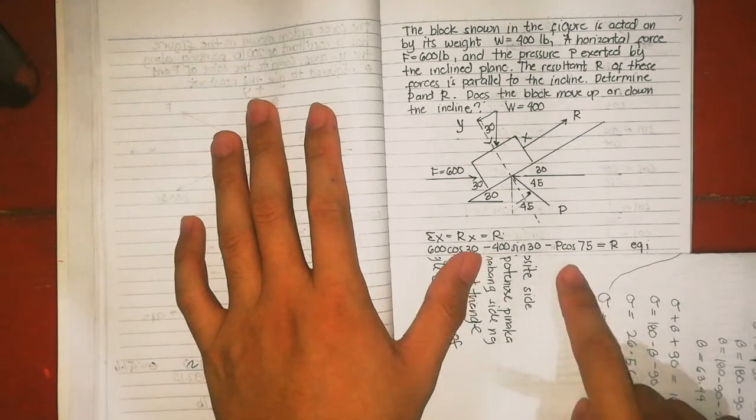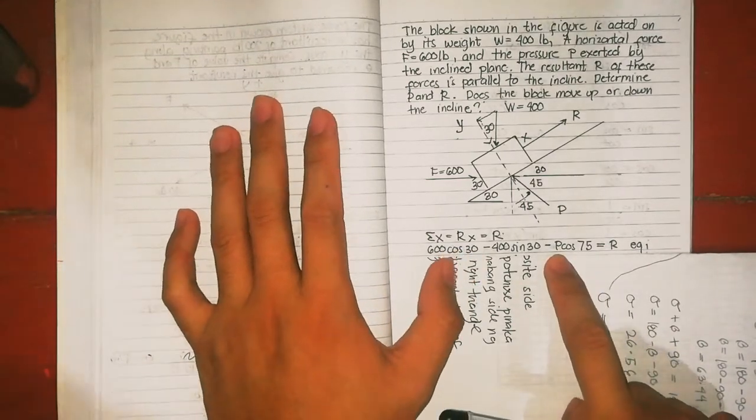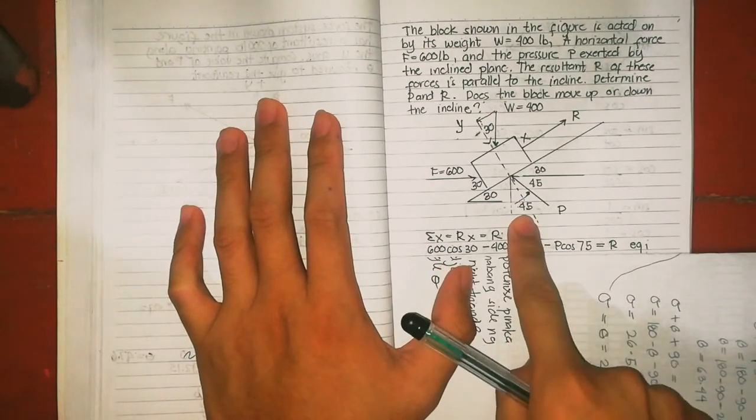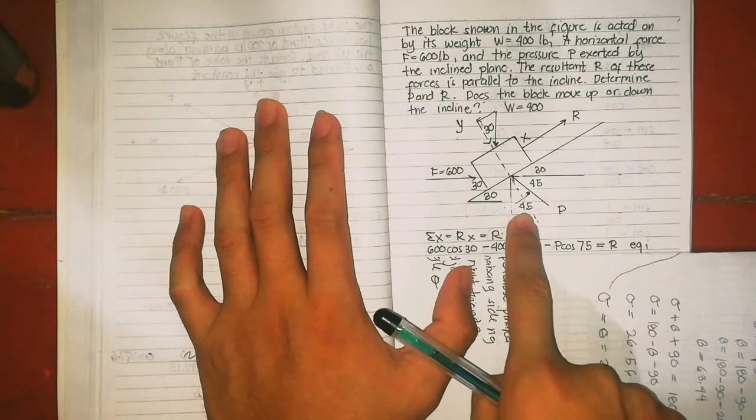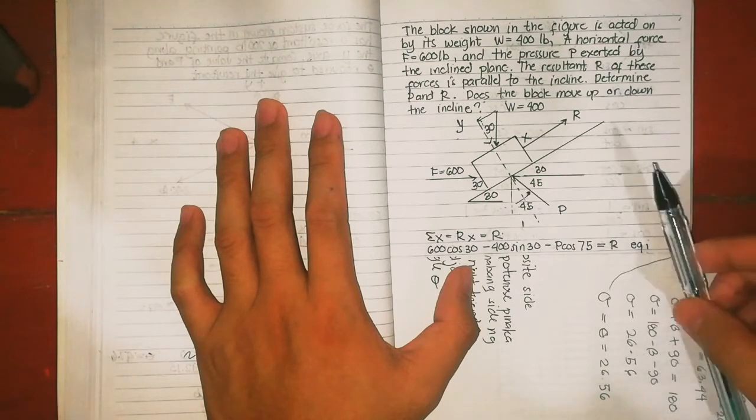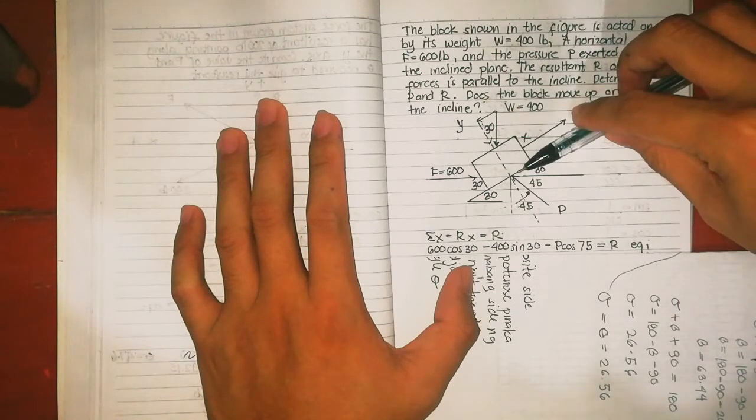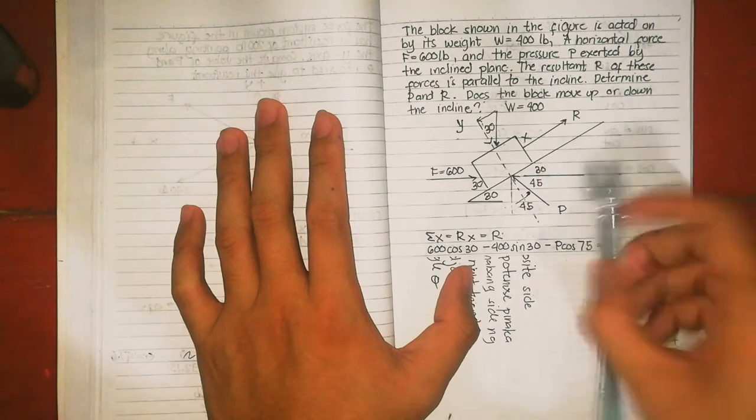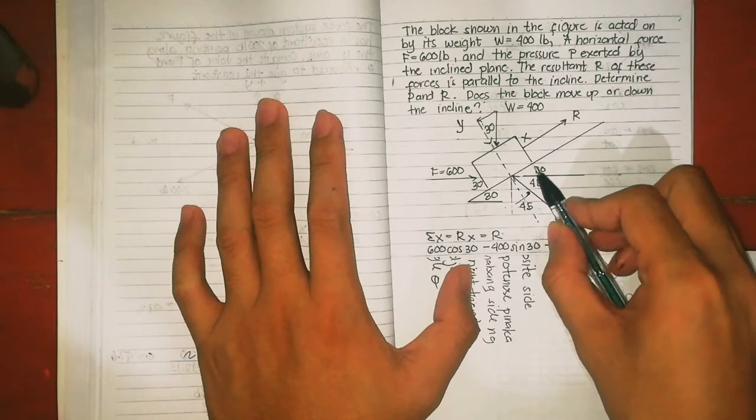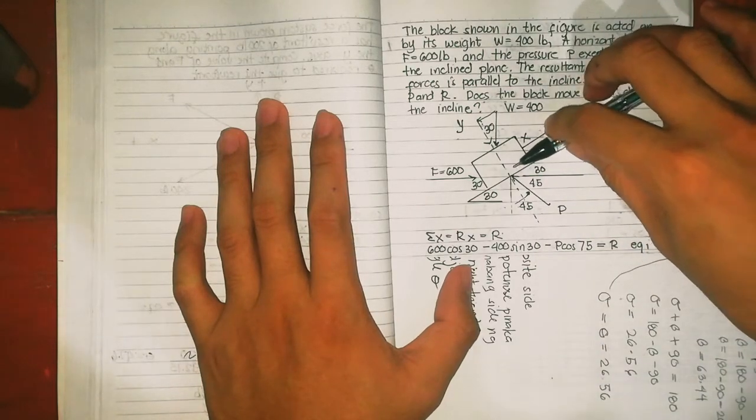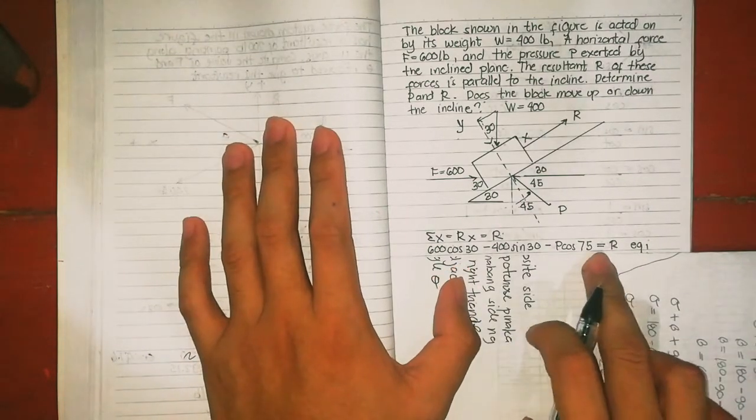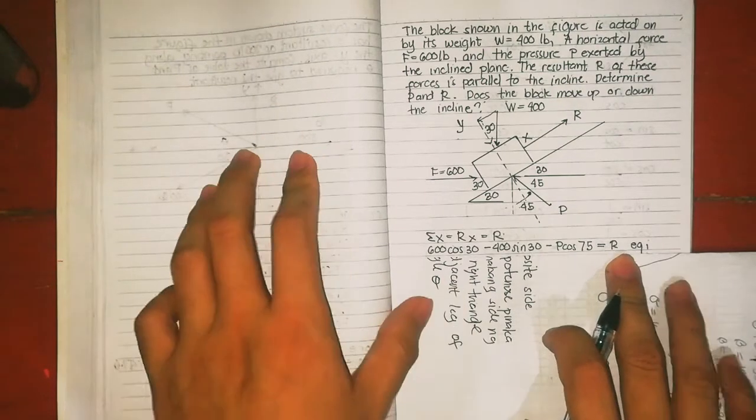This is P. It's complicated if we use this 45 degree angle, so we'll use this one. The Y component, the X component goes this way. The X component starts from the tail of the resultant and meets at the tip, tip to tip. So negative P cos 75 equals R. That's equation 1.